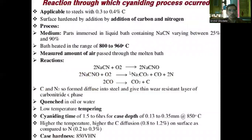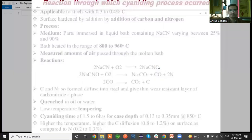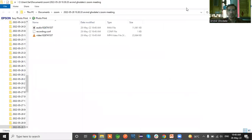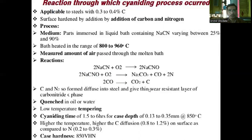The reactions occurring through the cyaniding process: cyaniding is applicable for steel with 0.3 to 0.4% carbon, with the surface hardened by addition of carbon and nitrogen. The process involves parts immersed in a liquid bath containing sodium cyanide varying between 25% to 90%. The bath is heated in the range of 800 to 960 degrees Celsius. A measured amount of air is passed through the molten bath. The first reaction is: 2NaCN + O₂ → 2NaCNO.